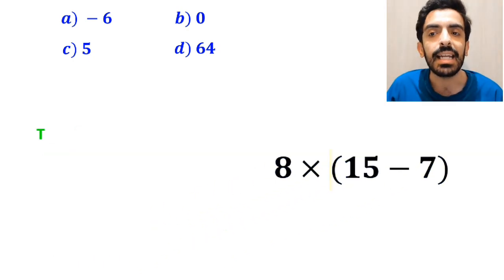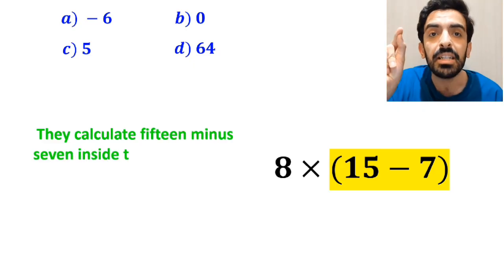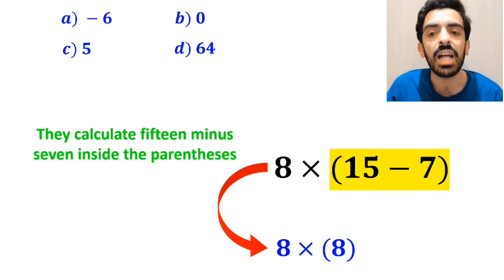In the next step, they calculate 15 minus 7 inside the parenthesis, which becomes 8 times 8. And finally, the value of this expression must be equal to 64.